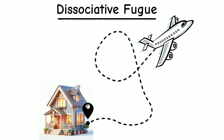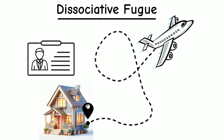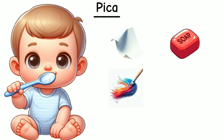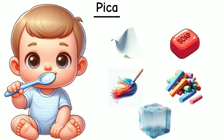Dissociative Fugue involves sudden unexpected travel away from home, often with an inability to recall one's past and personal identity. PICA is a feeding disorder in which someone eats non-food substances that have no nutritional value, such as paper, soap, paint, chalk, or ice.